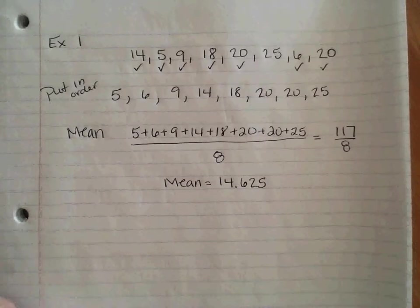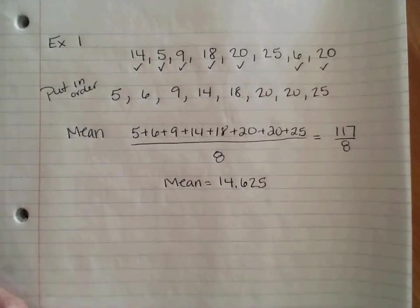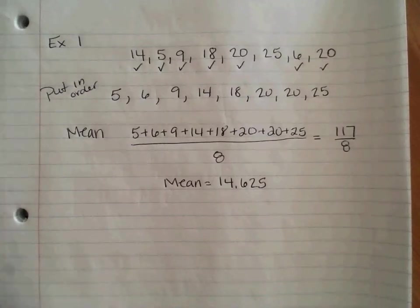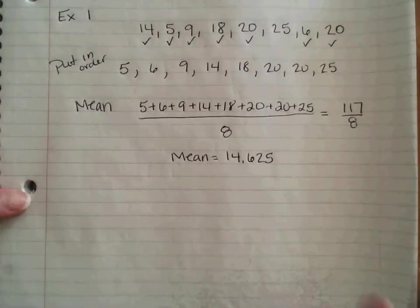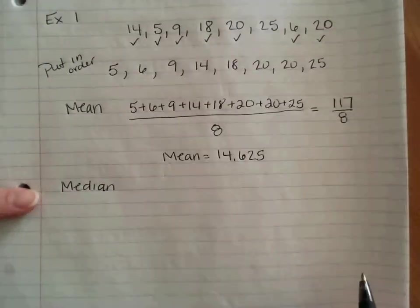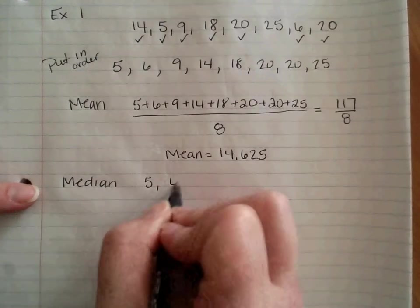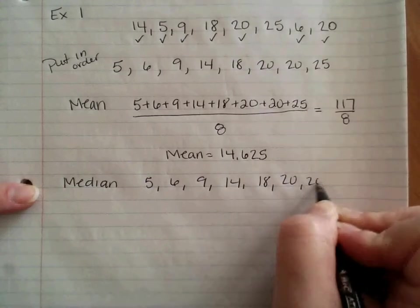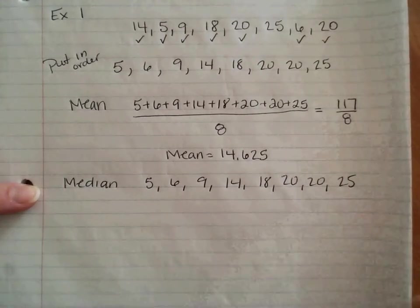So the average of all these numbers, the mean, approximately the middle is 14.625. Now, it's not necessarily the middle from 5 to 25 when I use the other information here. But I do have numbers all scattered out. The next one that I want to look at is our median. I'm going to rewrite my numbers so I can cross them out. 5, 6, 9, 14, 18, 20, 20, 25.